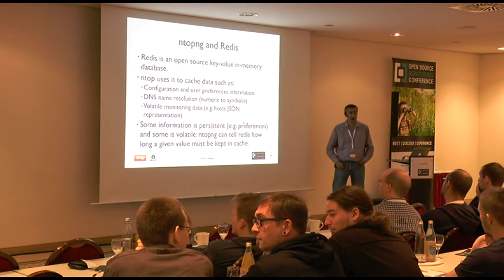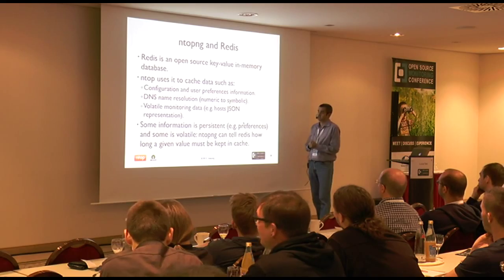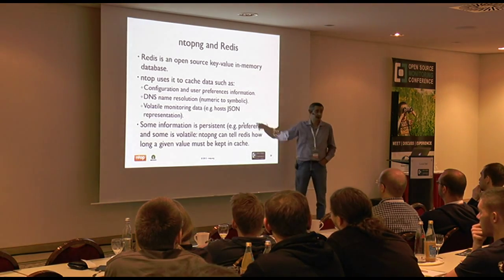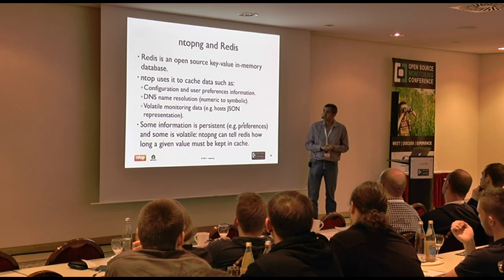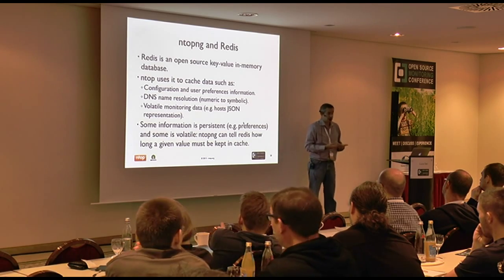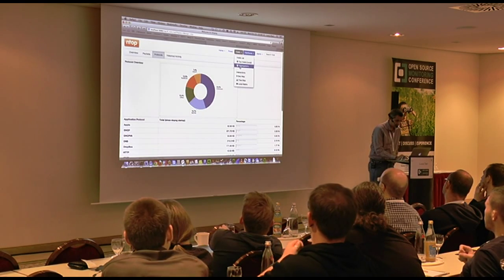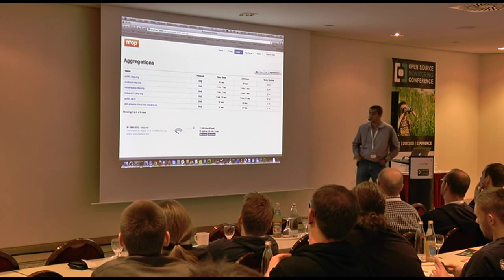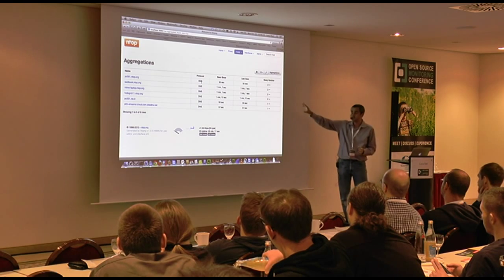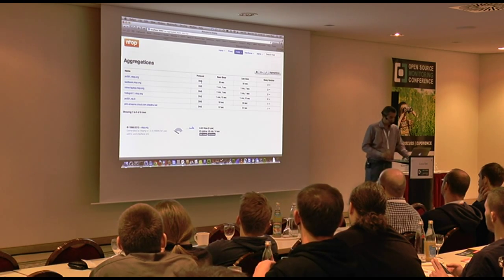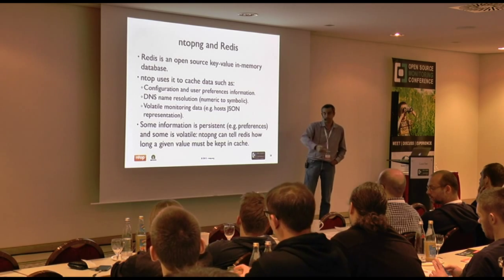Redis is a cache where NTOPNG stores temporary information like user configuration — more persistent data. We have DNS name resolution: whenever we see a host, we see the numerical IP and try to convert it to a symbolic name, or learn this information from the network. We have shown these aggregations — the domain name data being learned from DNS. DPI decoded the DNS response and mapped this information to a host.